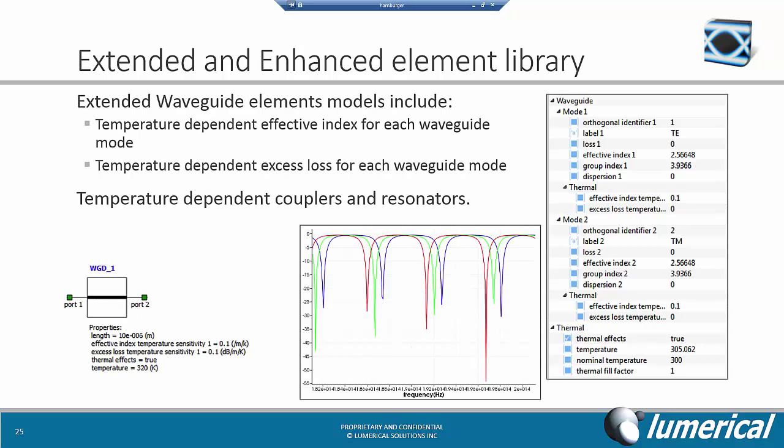The waveguide element models were extended to include sensitivity towards temperature for properties such as the effective index and excess loss for each of the waveguide modes. This allows the incorporation of thermal effects into waveguide propagation transfer function. The same idea can also be applied for different couplers and resonators.